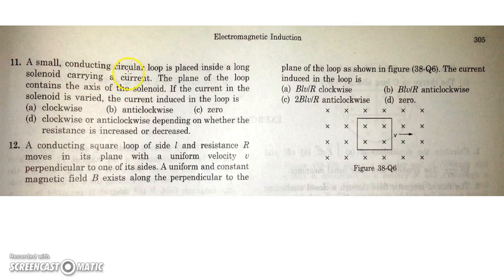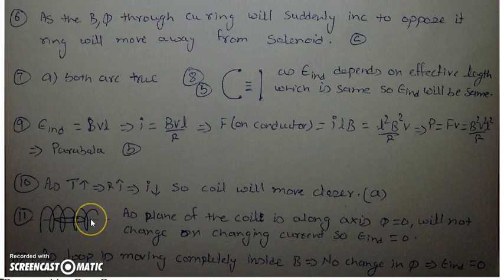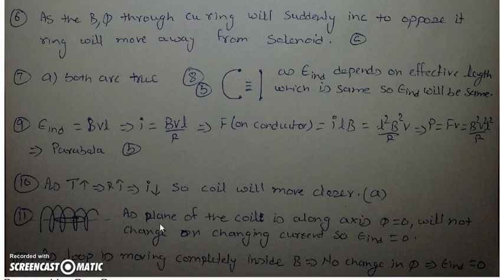In the next question, a small conducting circular loop is placed inside a long solenoid carrying current, such that the plane of the loop contains the axis of the solenoid — this line is very important. The magnetic field due to the solenoid is parallel to the axis, which lies in the plane of the ring, meaning no flux passes through the ring. The flux remains zero regardless of the magnitude of the current or field inside the solenoid, so there is no change in flux and hence no induced EMF in the loop.